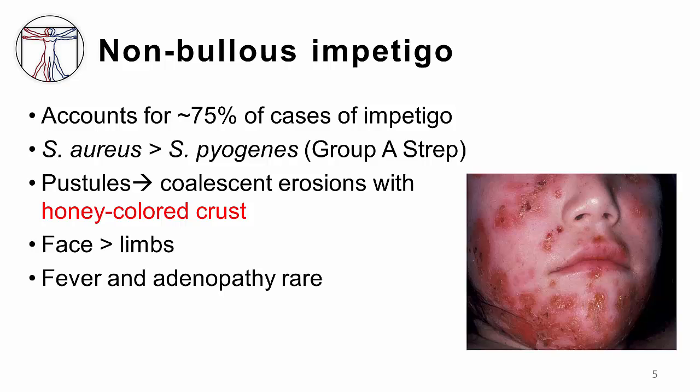Lesions begin as a pustule or vesicle, which may be single or multiple. Multiple lesions will often coalesce and then rupture, and the contents will dry to form honey-colored crusts surrounded by an erythematous halo. This description is actually pathognomonic for the disease — when you hear it, you should definitely think Impetigo.